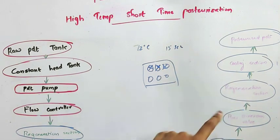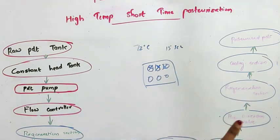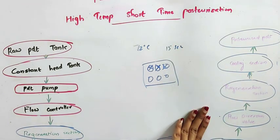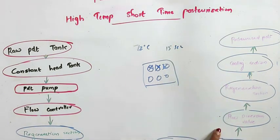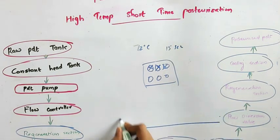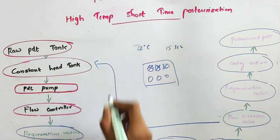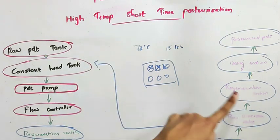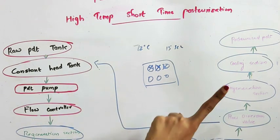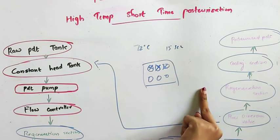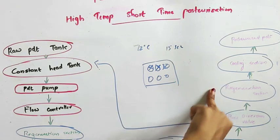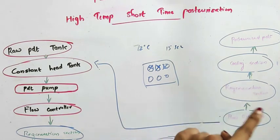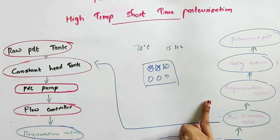From the holding tube, the milk reaches the flow diversion valve. If the milk that reaches the flow diversion valve is properly pasteurized, it will flow on to the next section. Otherwise, this flow diversion valve will return the milk to the constant head tank. If the milk is properly pasteurized, it will reach the next section.